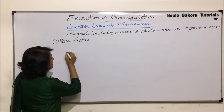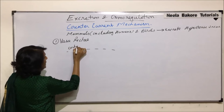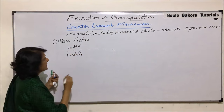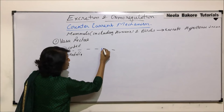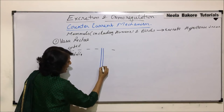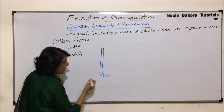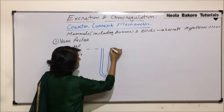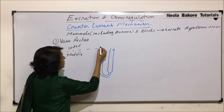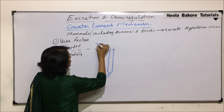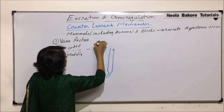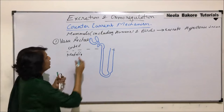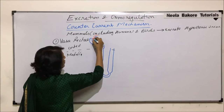Let us draw a part of the loop of Henle. This is the cortex and this part is the medulla. The loop of Henle is in the medullary region. This is the limb going down — the descending limb — and it makes a U-turn and goes up, which is the slightly wider ascending limb. We draw the peritubular capillaries, and here is Bowman's capsule and the efferent arteriole emerging from the glomerulus.